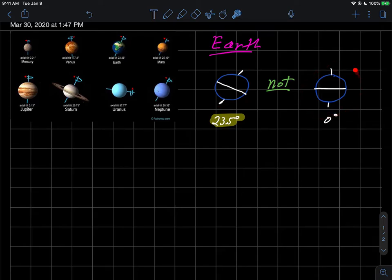In fact we know that the earth is tilted at 23 and one half degrees. It would not be inserted into its orbit at zero degrees like this.